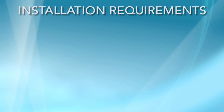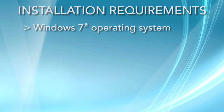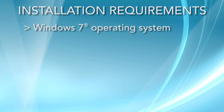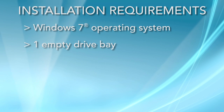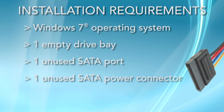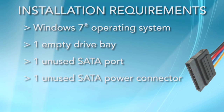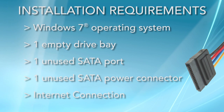Before we begin, verify that you have the following. Your desktop PC needs to be running on the Windows 7 operating system. Your desktop tower must have at least one empty drive bay. Your desktop system must be equipped with a SATA port, as well as a SATA power connection like this one. You will also need an internet connection.